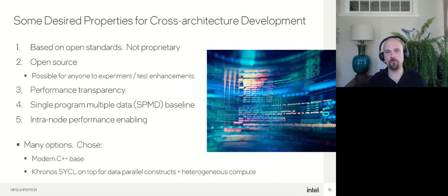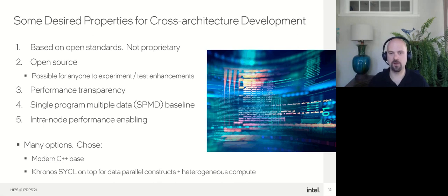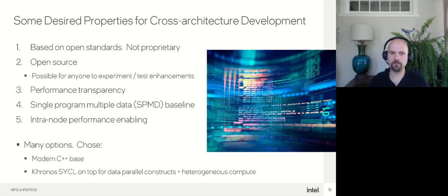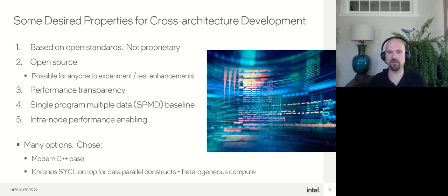There was also a focus on within-node performance first, because that's where the big gap in the industry is. For working across nodes, there are many existing cross-node communication libraries in heavy use in HPC that work pretty well. But within the node — with the proliferation of different types of heterogeneous accelerators — the problem was to provide a consistent framework to access all of them in a unified way. In the end, we chose a modern C++ baseline, C++17 in the current invocation, and on top of that, to provide features needed for extensive data parallel and heterogeneous compute, the baseline is the SYCL standard from the Khronos Group.